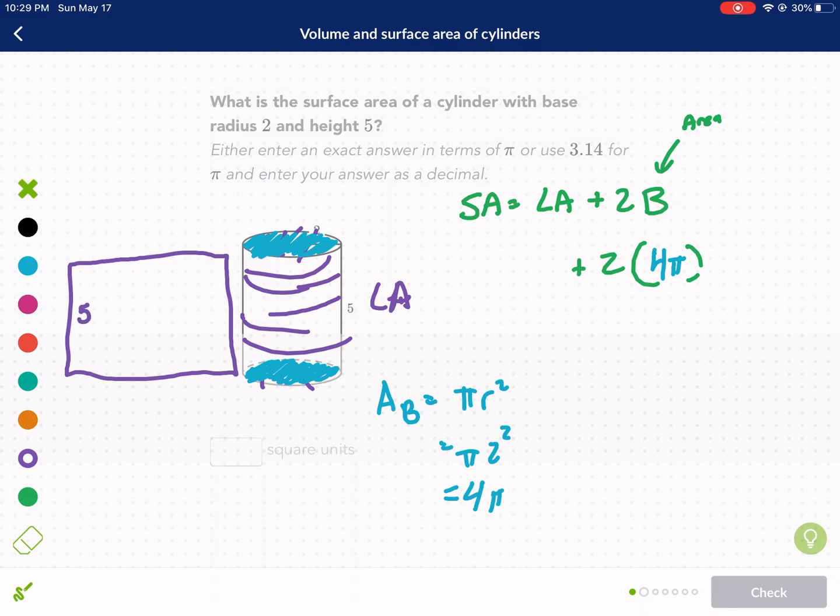Now what would this distance be equal to? That's the question at hand. Well, that distance right there, if we rolled it up, it would form the perimeter of the circle or the circumference. So what we need to do is we need to find the circumference of the circle and then multiply it using the rectangle formula by the height, which is 5.